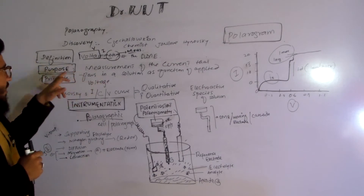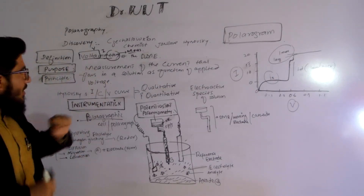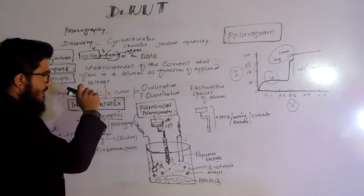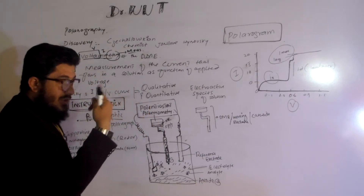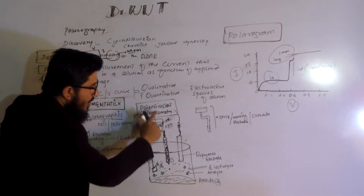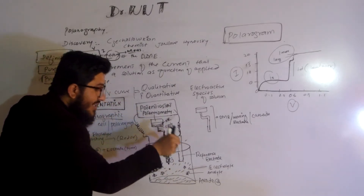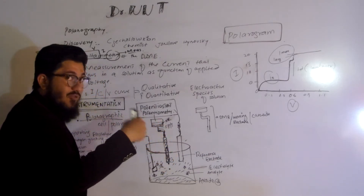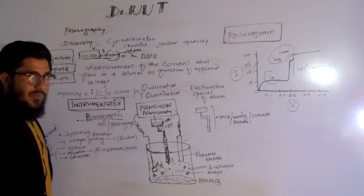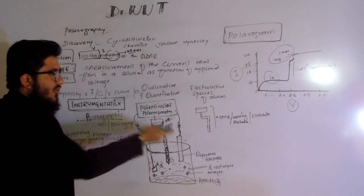What is the purpose of polarography, and what is the principle of polarography? Both fall under a single statement: the measurement of the current that flows in a solution as a function of applied voltage. The current is generated in the beaker because of the supply of voltage. If we supply the voltage to the solution and that solution contains our analyte, that analyte generates a current — measuring that current is the purpose and principle of polarography.